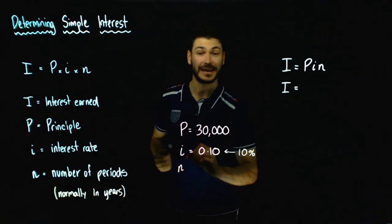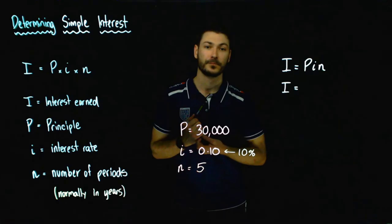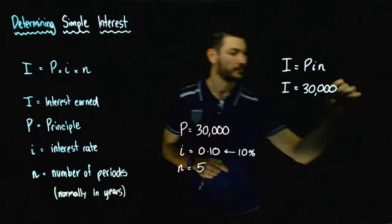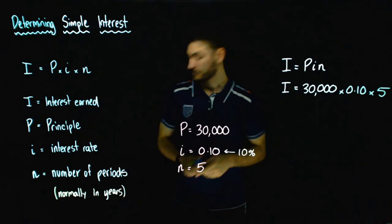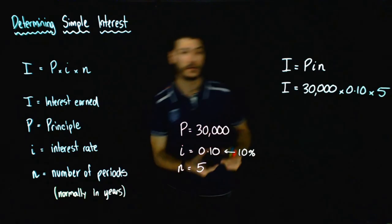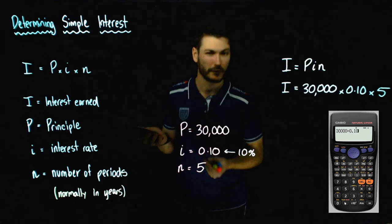And lastly, the number of periods — in this case it is years. We're borrowing the money for 5 years. So we have P, we have I, we have N, and now it's just a case of substituting them into the formula. So I equals $30,000 times 0.10 times 5. Now grab your calculator — we're going to pop that in: 30,000 times 0.10 times 5, and we're going to get $15,000.